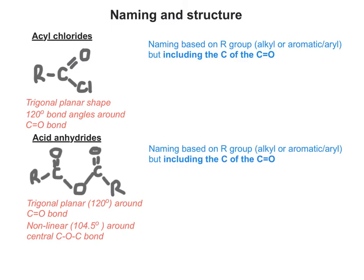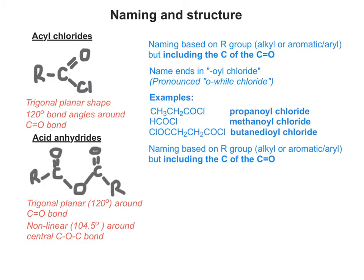When you're naming them, in each case you use the R group or R groups, whether alkyl or aromatic, and include the carbon of the C=O. For acyl chlorides, the name always ends in -oyl chloride. So you've got propanoyl chloride, methanoyl chloride, and in the case where there are two acyl chloride groups at each end, you'd have butanedioyl chloride.